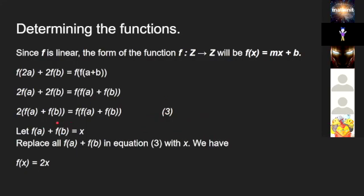Let f(a) + f(b) = x. Replace all f(a) + f(b) in equation (3) with x. So that means we get f(x) = 2x, because if you swap this entire thing out with x, we get simply 2x.